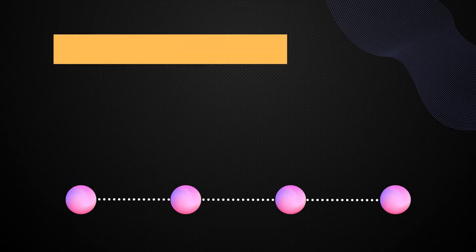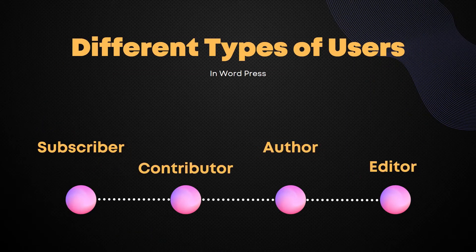Now, what are the different types of users? By default in WordPress, you have four different types of users. The first is the subscriber, then the contributor, then author, and then editor. This is also the level of access that they have. So subscriber has the access level equal to one, contributor has two, author three, and editor four. But this does not mean that these are the only users that a WordPress website has.